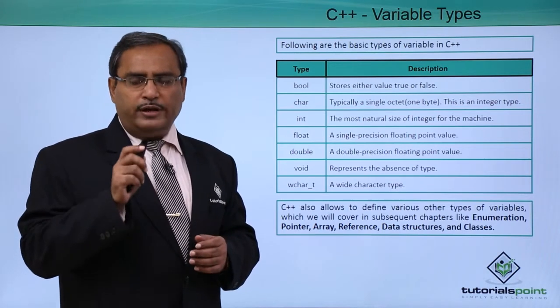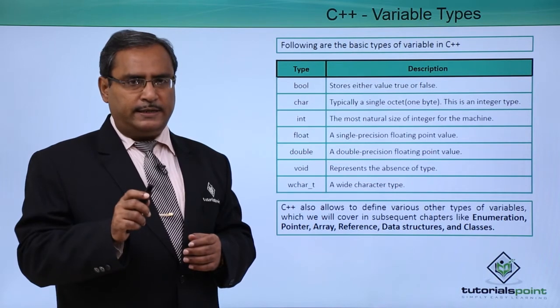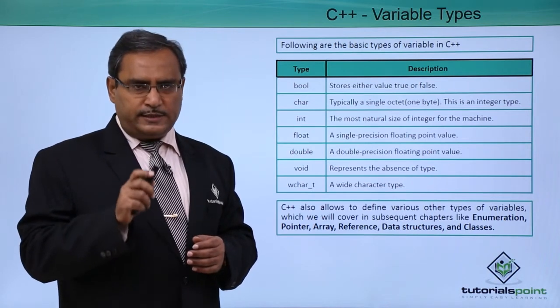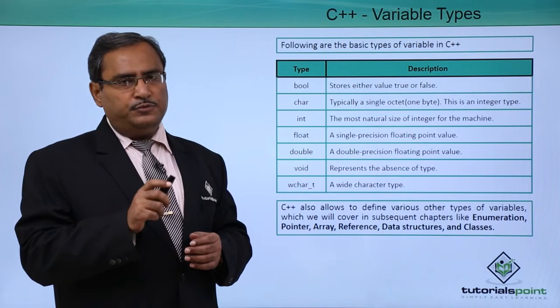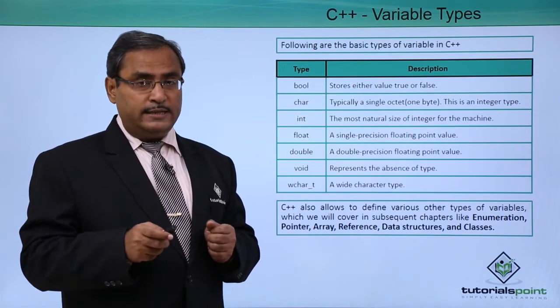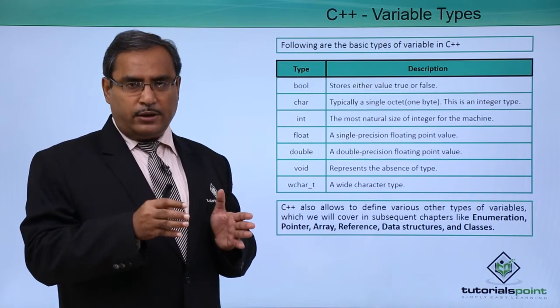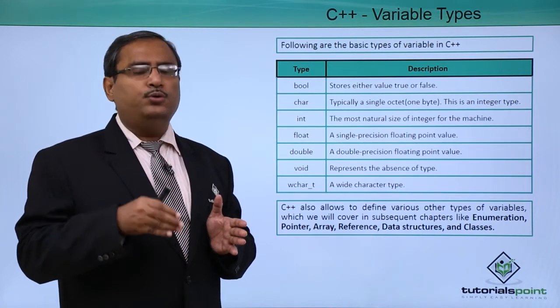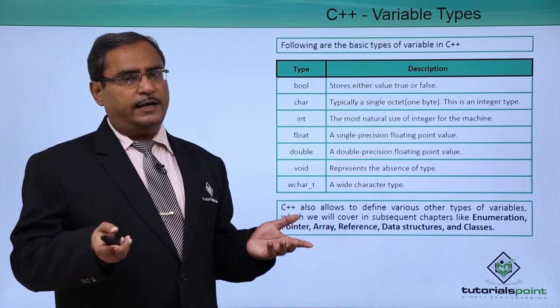We know that ASCII code requires 8 bits to get represented because we are having 256 number of ASCII codes and the values are ranging from 0 to 255. Out of them, 0 to 127 is known as the normal ASCII code and 128 to 255 is known as the extended ASCII code.